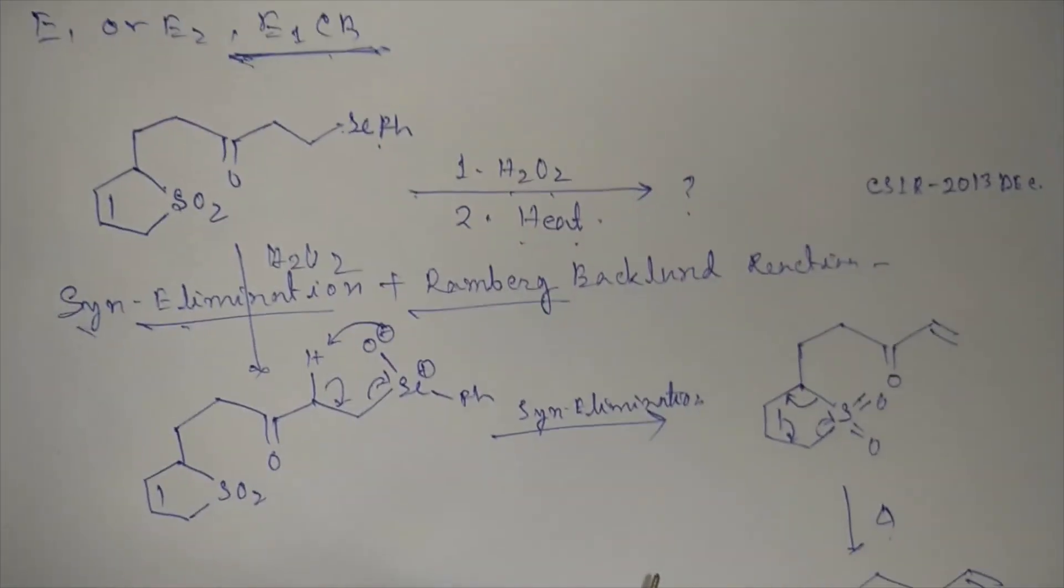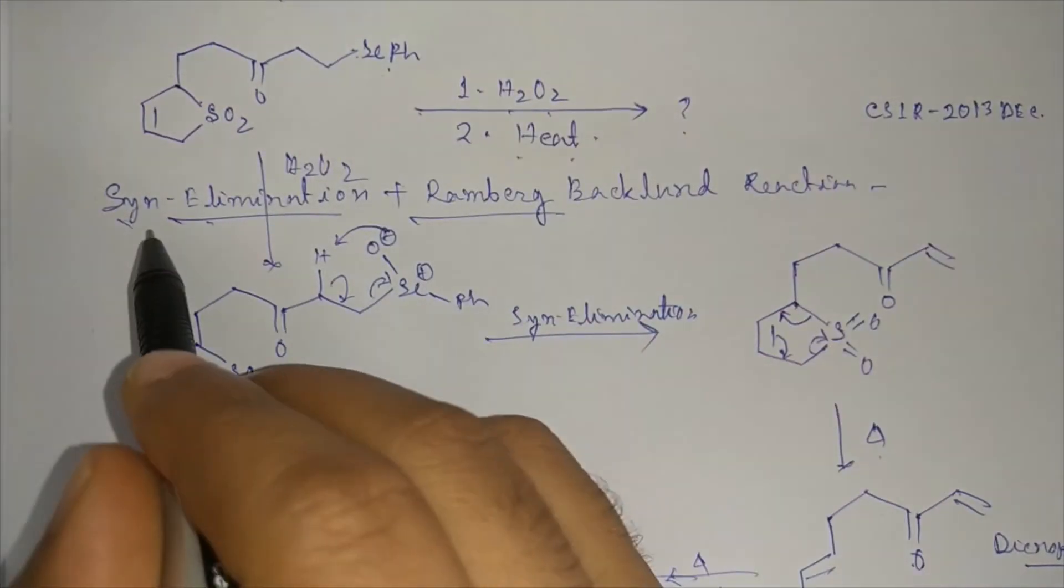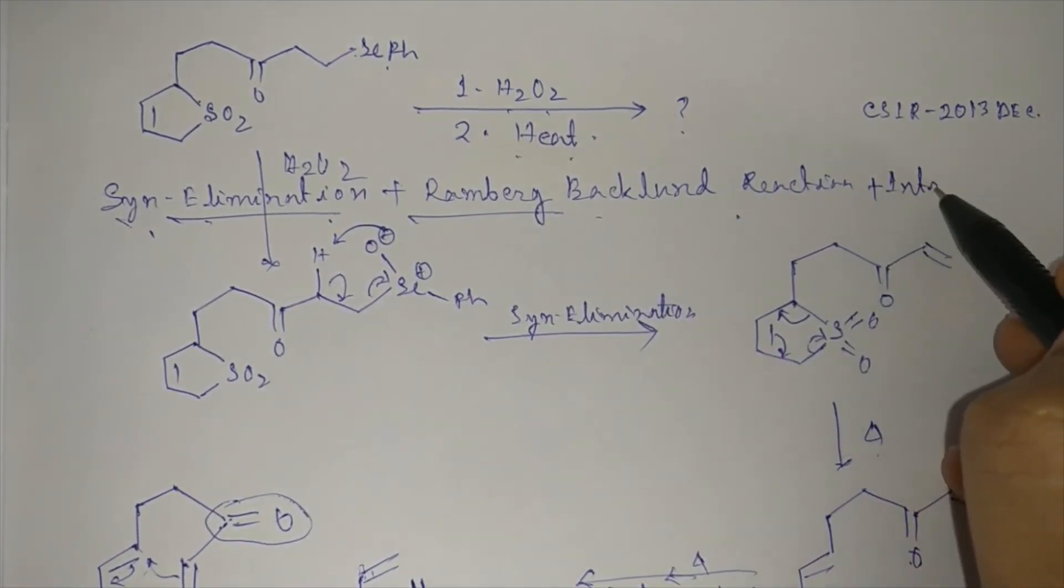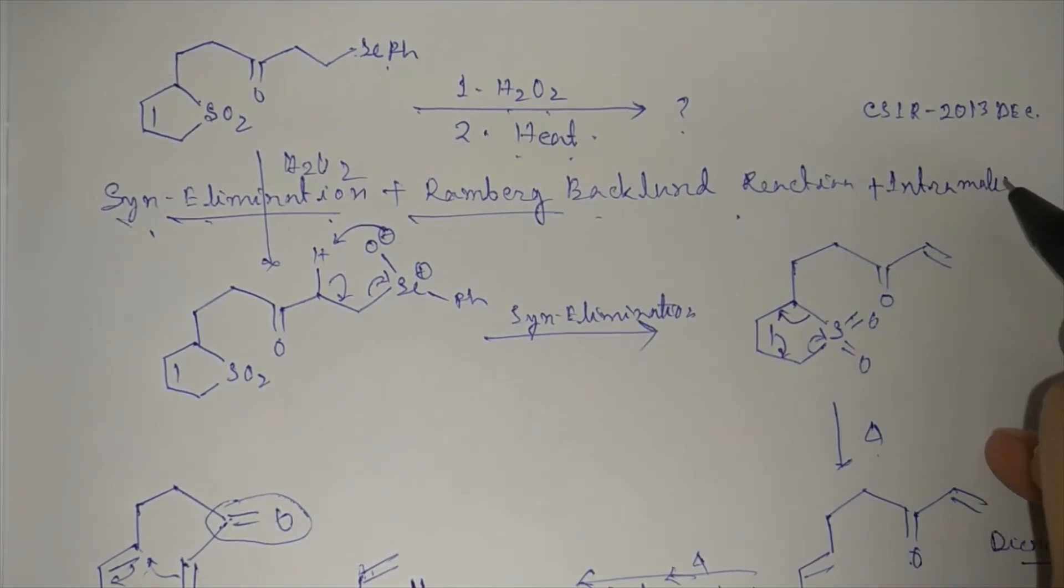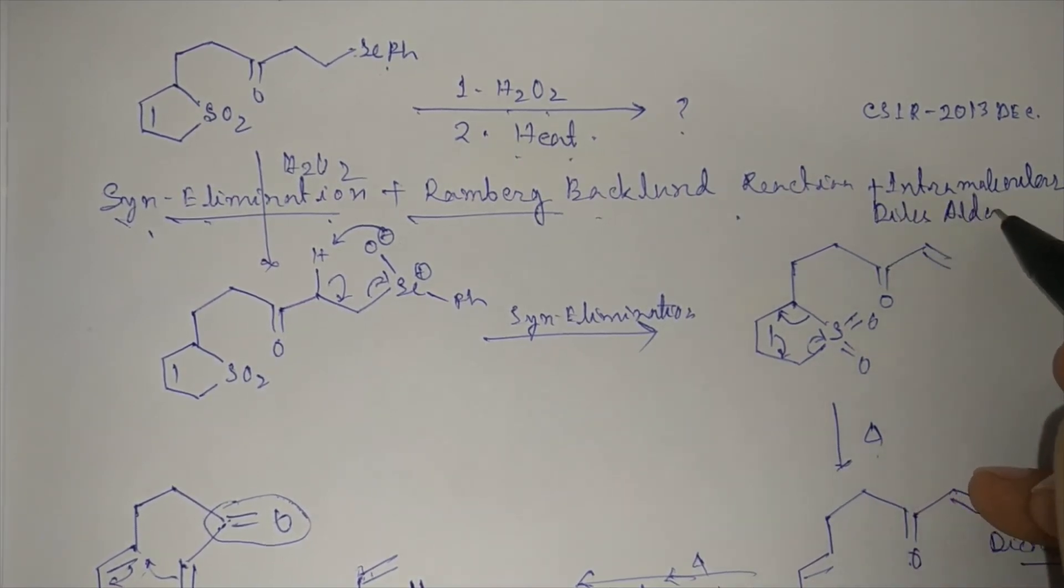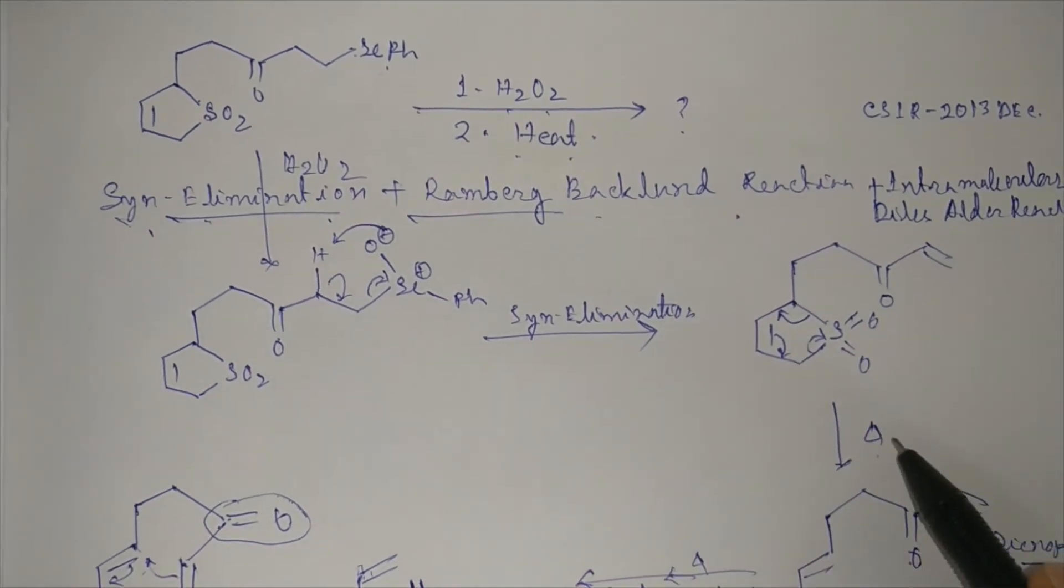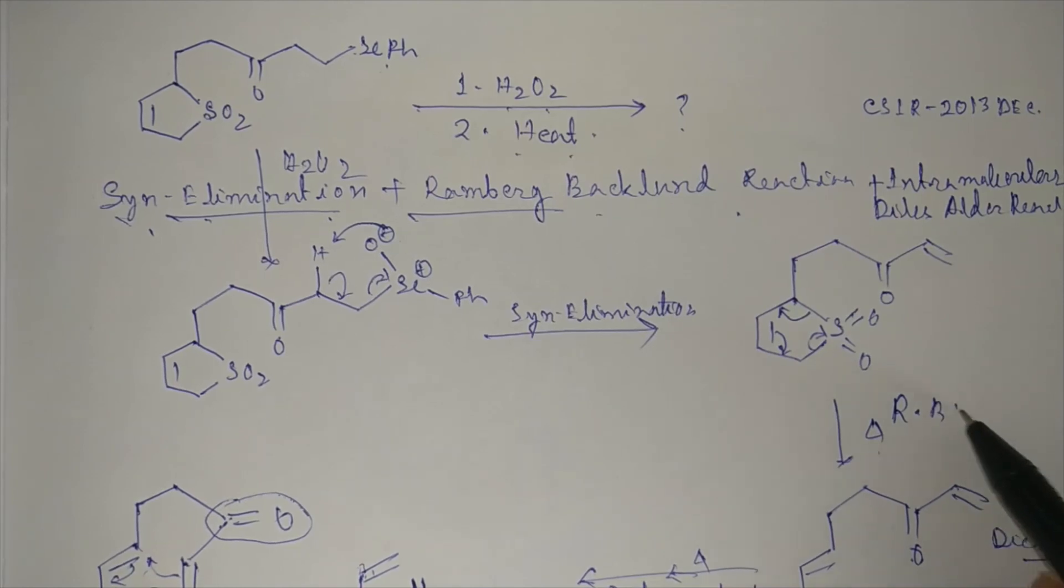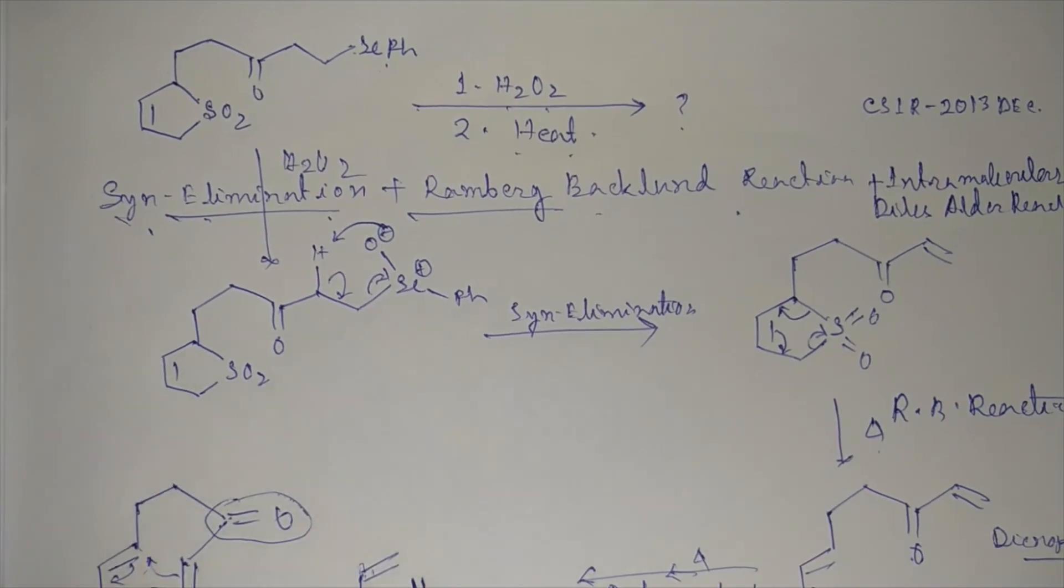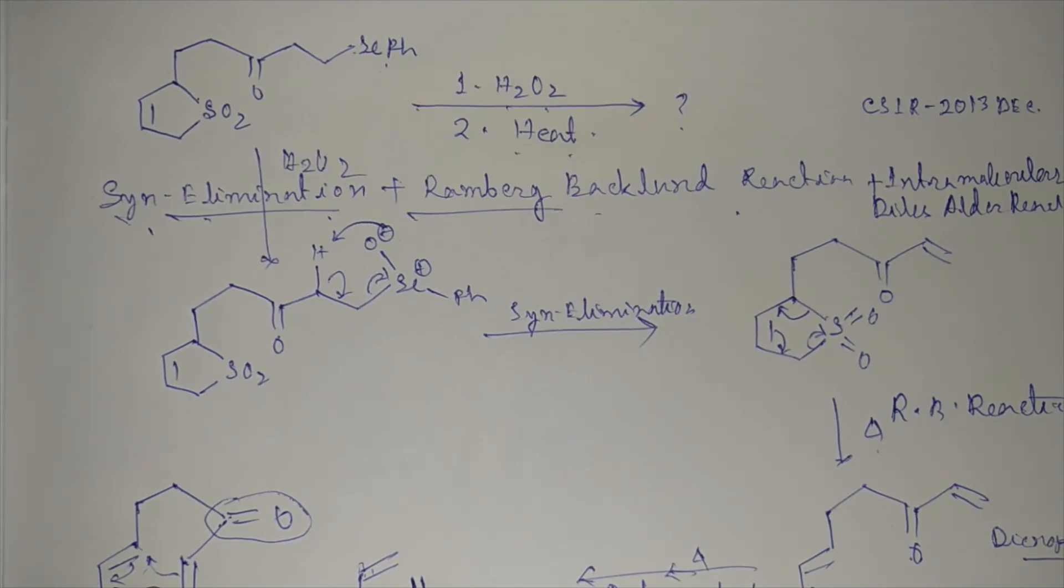So this reaction is actually a combination of syn elimination plus Ramburg-Baklund reaction plus intramolecular Diels-Alder reaction. This step is called Ramburg-Baklund reaction, this is intramolecular Diels-Alder. So guys, if you have any doubt regarding this video, please let me know in comment box. To get such interesting videos, subscribe my channel. Thank you, have a good day.